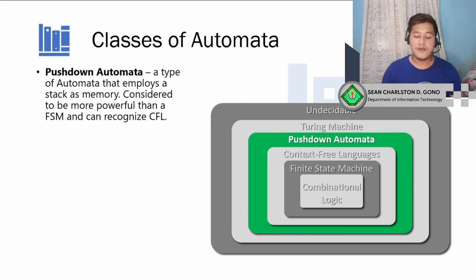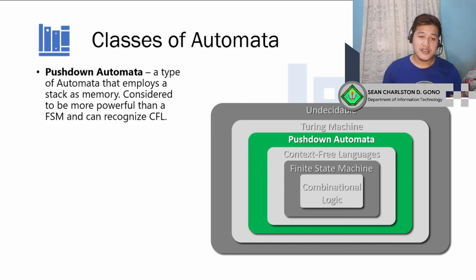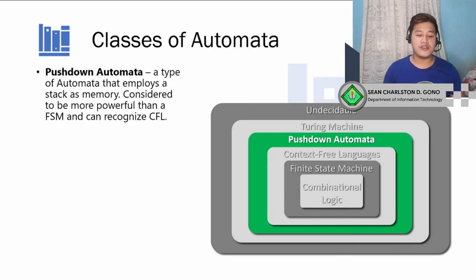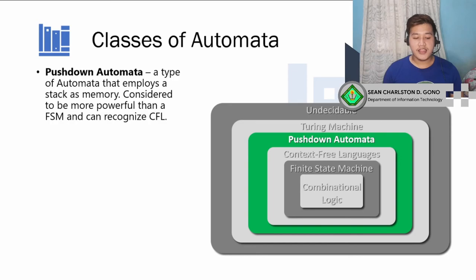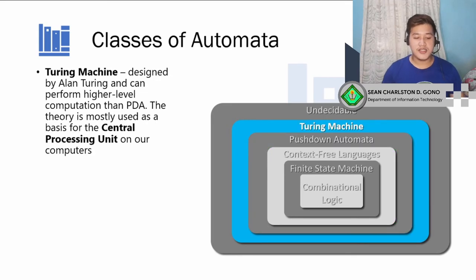We're going to discuss pushdown automata, which is an improvement on finite state machines and context-free languages. This is a type of automata that employs a stack — if you've covered data structures, we already discussed stacks there. Pushdown automata are more powerful than finite state machines and can recognize context-free languages, but not as powerful as the next level: the Turing machine.